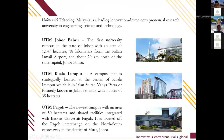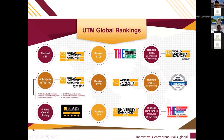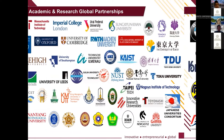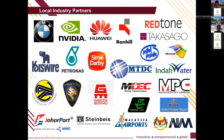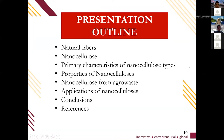UTM has three campuses: UTM Johor Bahru, UTM Kuala Lumpur, and UTM Pagoh. It covers seven core faculty areas and has a global ranking, with academic and research global partnerships as well as local industry partners experienced by students.